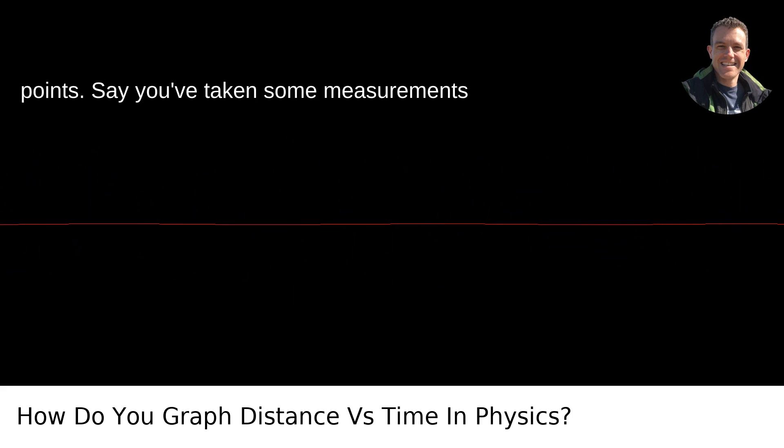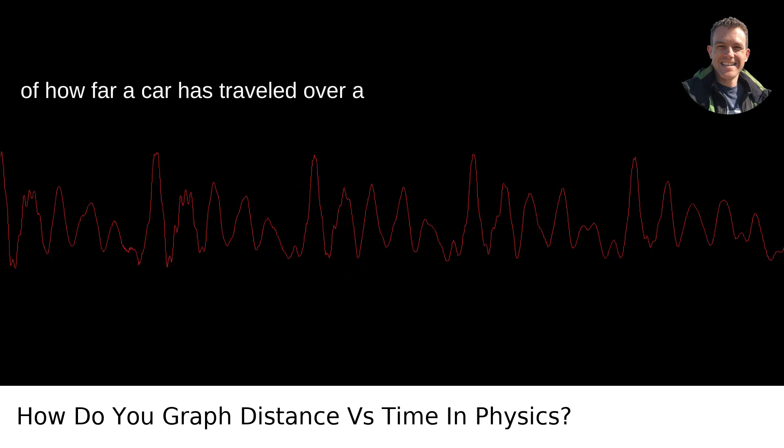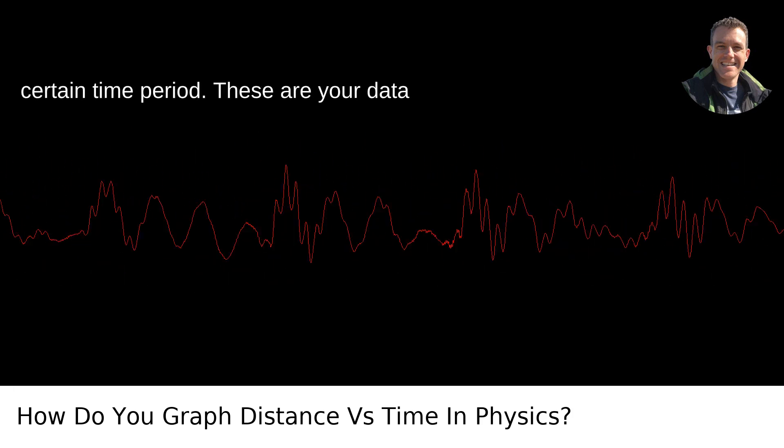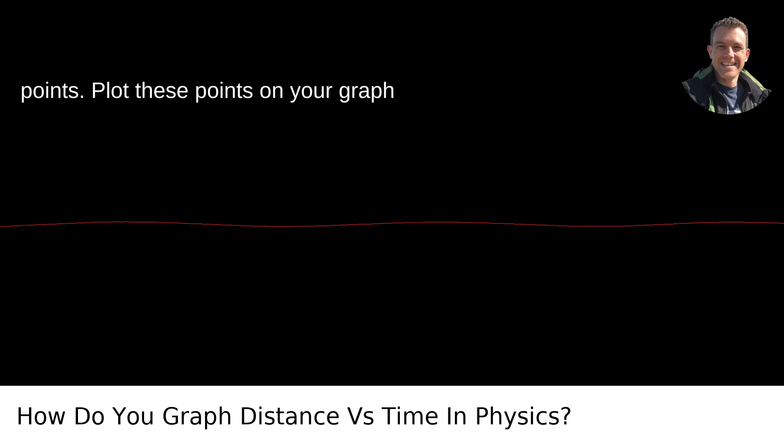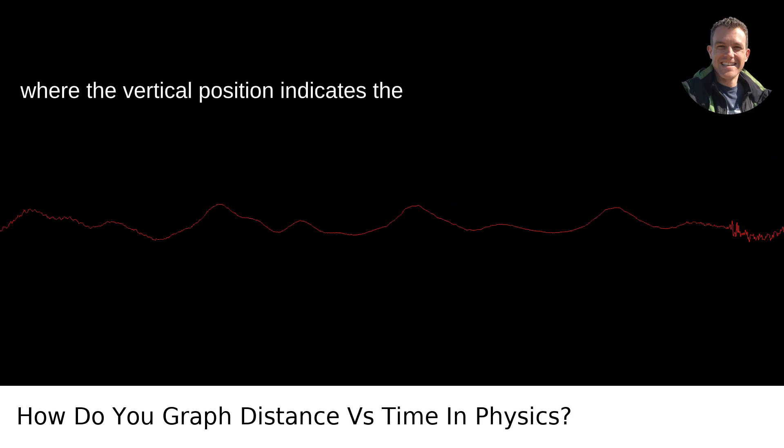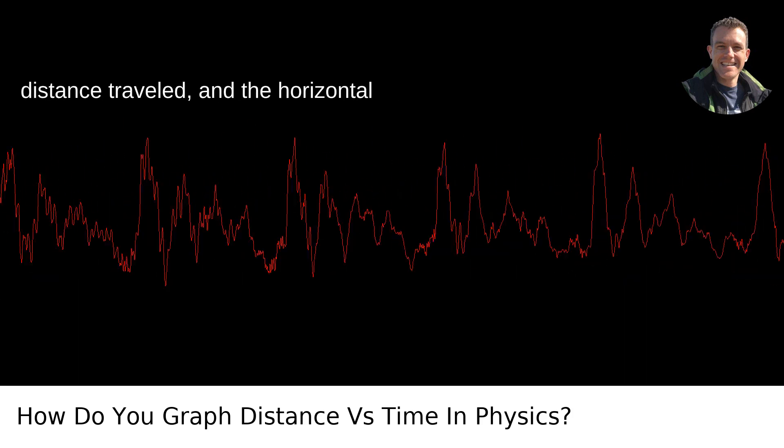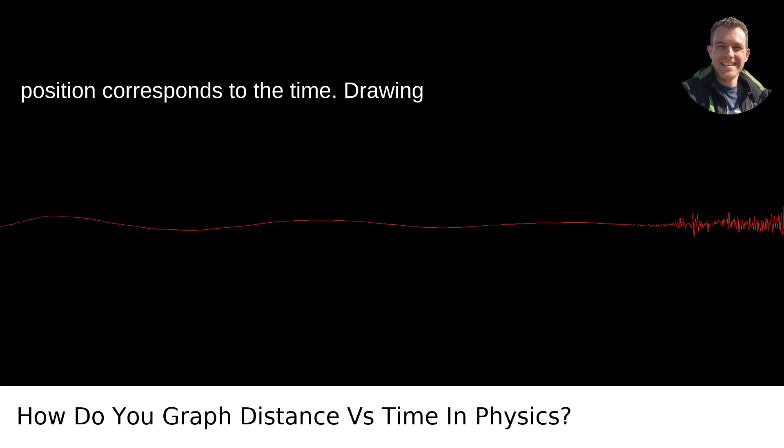Plotting the points: Say you've taken some measurements of how far a car has traveled over a certain time period. These are your data points. Plot these points on your graph where the vertical position indicates the distance traveled, and the horizontal position corresponds to the time.